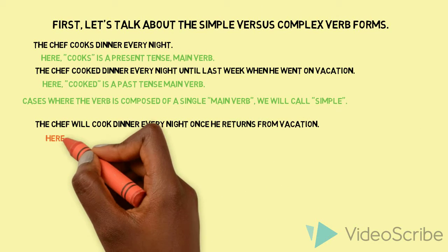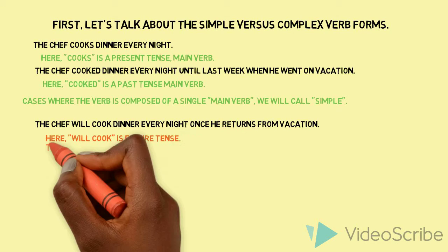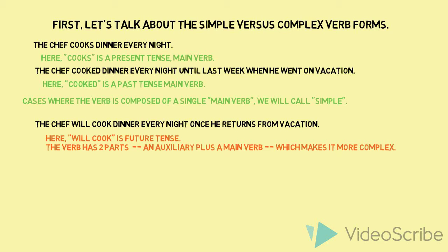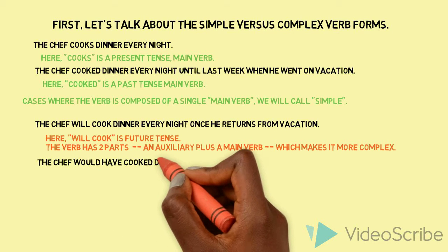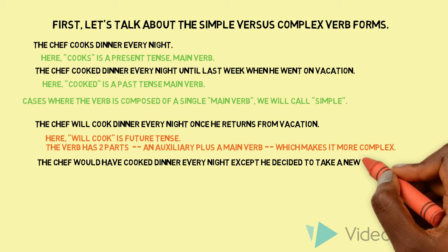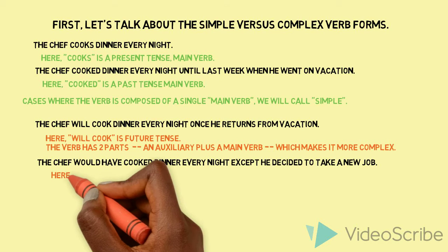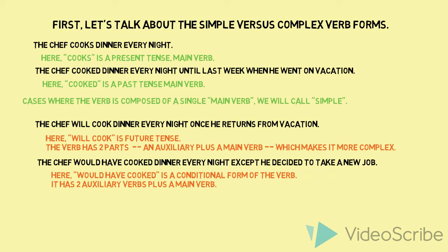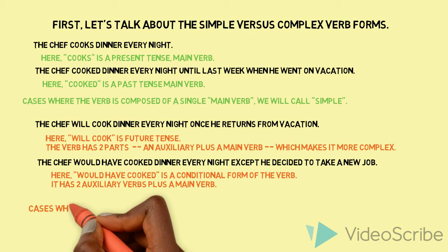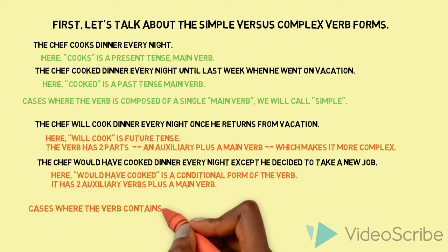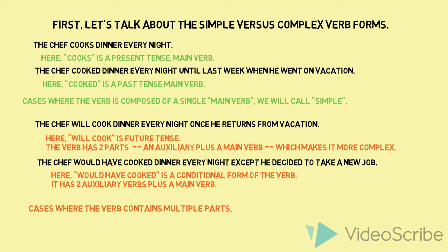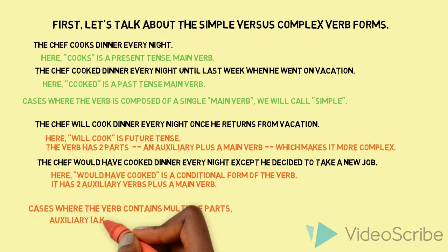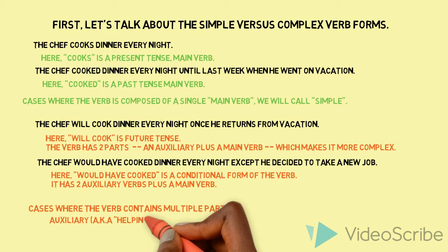The chef will cook dinner every night once he returns from vacation. Here, will cook is future tense — it has two parts, an auxiliary and a main verb, which makes it more complex. The chef would have cooked dinner every night, except he decided to take a new job. Here, we have a conditional form with two auxiliary verbs and a main verb. Cases where the verb contains multiple parts — auxiliary and main verb — we'll call these complex.